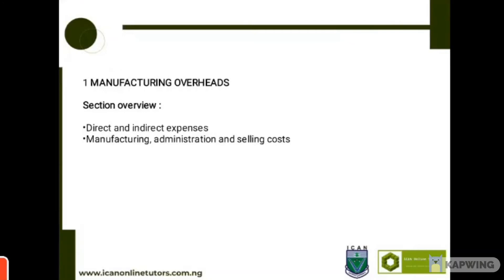Examples of administration costs include the salaries of the accountant, the cashier, the cleaner, and the manager. These costs will be incurred whether we manufacture a particular product or not. Examples of selling costs are those costs incurred in selling goods to customers — for example, distribution expenses, such as when a company covers delivery costs of goods from the warehouse to the customer's residence.